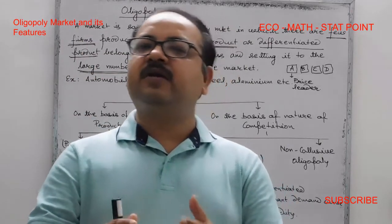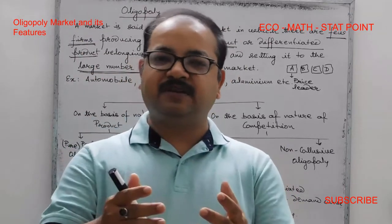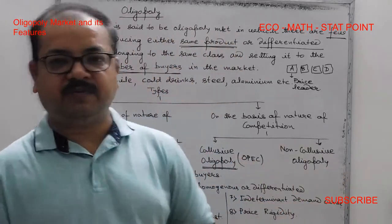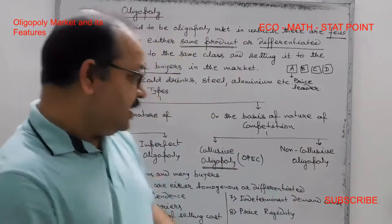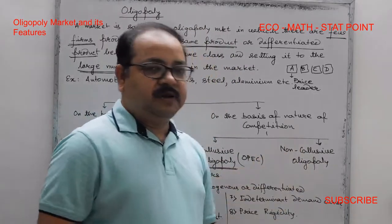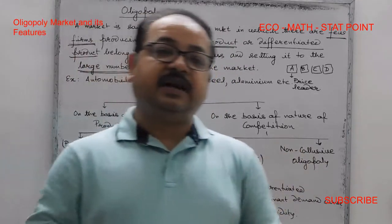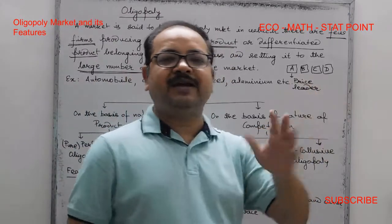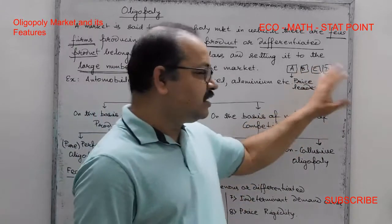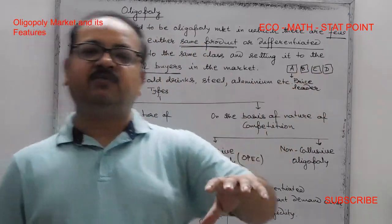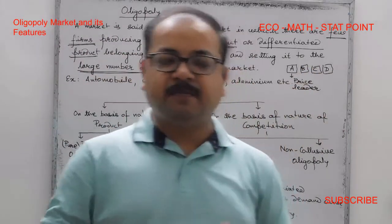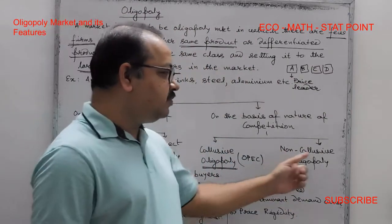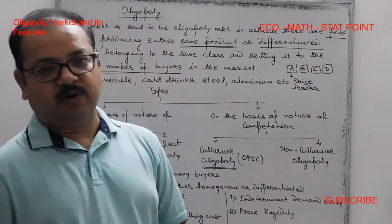In collusive oligopoly, firms maximize joint profit through agreements among members. In non-collusive oligopoly, there is price competition, and there is no formal or informal agreement between firms; price and quantity are determined competitively.